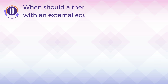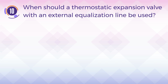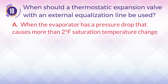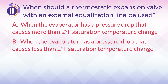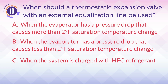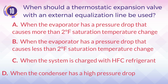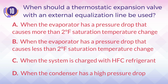Number 10. When should a thermostatic expansion valve with an external equalization line be used? A. When the evaporator has a pressure drop that causes more than 2 degrees Fahrenheit saturation temperature change. B. When the evaporator has a pressure drop that causes less than 2 degrees Fahrenheit saturation temperature change. C. When the system is charged with HFC refrigerant. D. When the condenser has a high pressure drop.